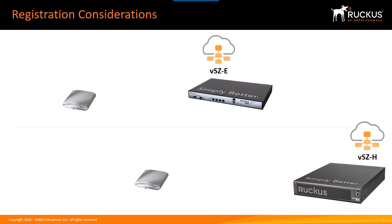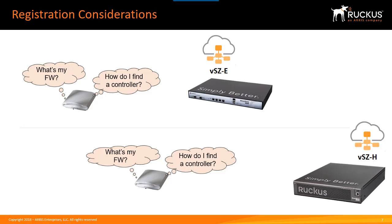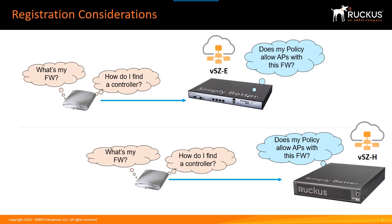The first thing we need to consider for the registration process is: what firmware is the access point running and how will that influence its connection to the controller? Next, how does the access point find the controller — manually or through an automated process? Once they reach the controller, the controller has questions to answer: does the controller policy allow this AP to connect? And particular to the Essentials version, do we need to manually approve this access point or can we automate that process?